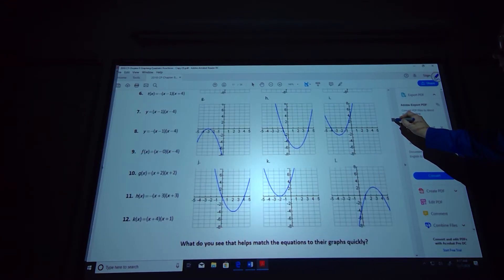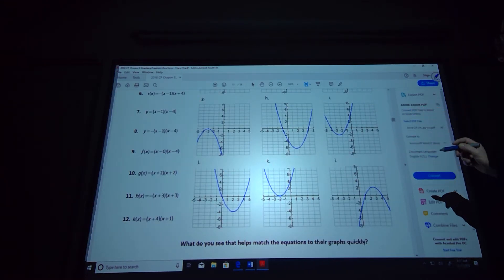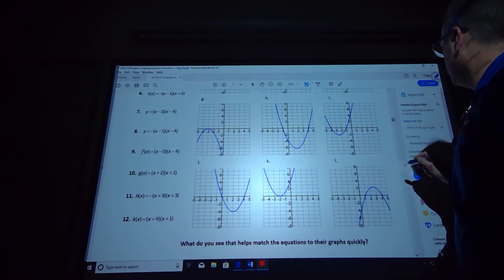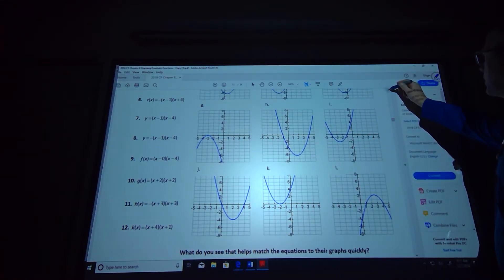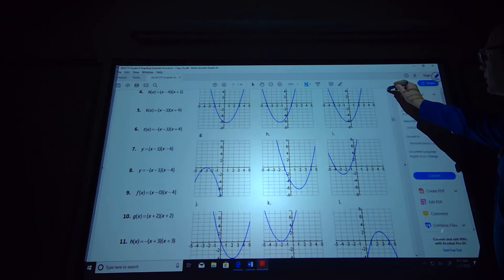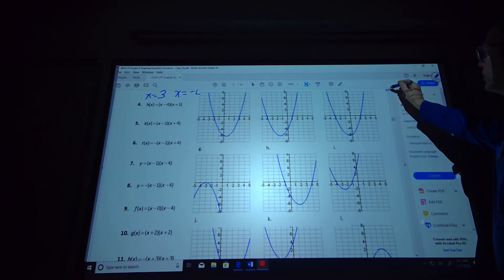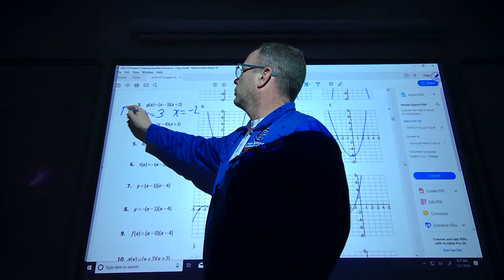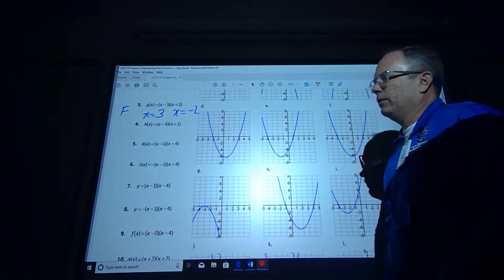I just went way too far. So crossing at 3 and negative 2. Negative 3 and 2 opens up. So it looks like F is our answer for this one because it opens up and it crosses at 3 and negative 2.